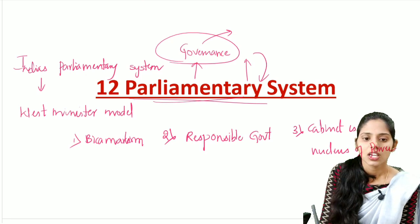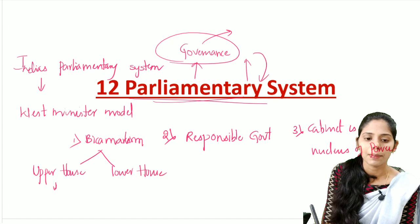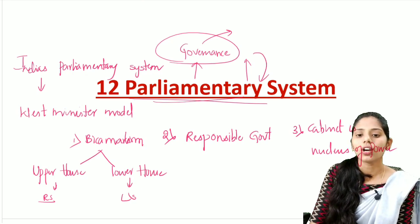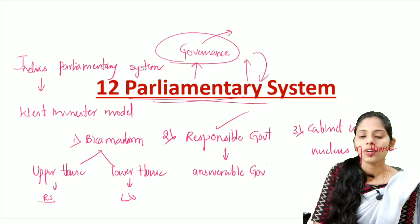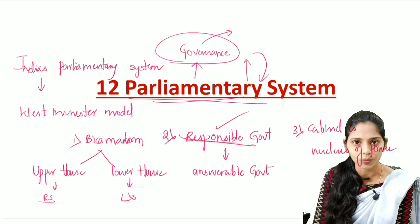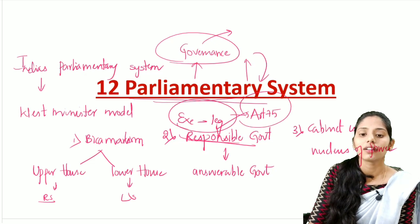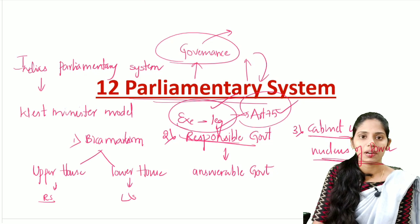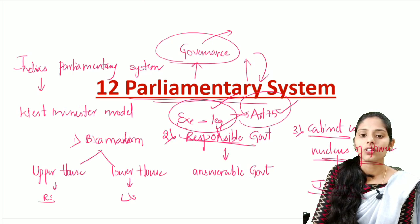When talking about bicameralism, we have two houses: the upper house and the lower house. In India, Rajya Sabha is the upper house, also called the Council of States, and the lower house is Lok Sabha, also called the House of the People. Regarding the responsible government, it means an answerable government — the executive is responsible to the legislature. Article 75 of the Indian Constitution talks about this responsibility. The cabinet as the nucleus of power was said by the political analyst Ivor Jennings.